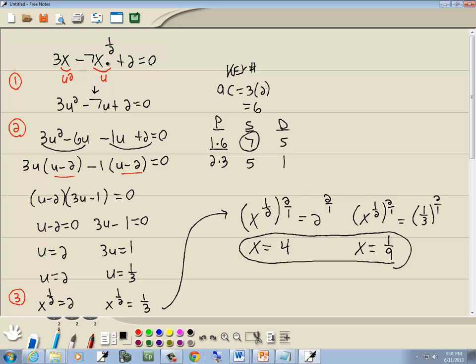Now the 1 ninth. If I put 1 ninth here, 1 ninth to the 1 half power, that's the square root of 1 ninth, which is 1 third, so that gives us 7 thirds. If I put 1 ninth here, that gives us 1 third. 1 third minus 7 thirds gives us negative 6 thirds, which is negative 2, plus 2. So that checks. And those are the answers.